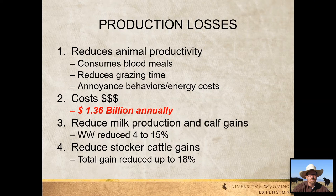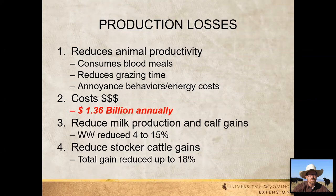This costs the U.S. cattle industry over a billion dollars a year in production losses. Some losses include reductions in milk production in females, and calf weaning weights can be reduced anywhere from 4 to 15%. For yearling, stocker, or growth cattle, total gains can be reduced up to 18% when infested with horn flies — a big problem that producers want to pay attention to.